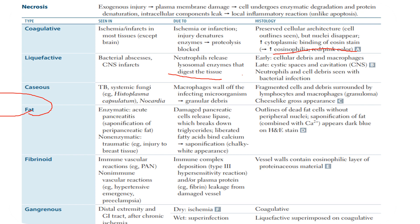Fibrinoid necrosis is seen in immune vascular reactions such as polyarteritis nodosa, and non-immune vascular reactions like hypertensive emergency or preeclampsia. This is due to immune complex deposition as in type III hypersensitivity reaction, or plasma protein and fibrin leakage from the damaged vessel. Histologically, the vessel walls contain an eosinophilic layer of proteinaceous material.